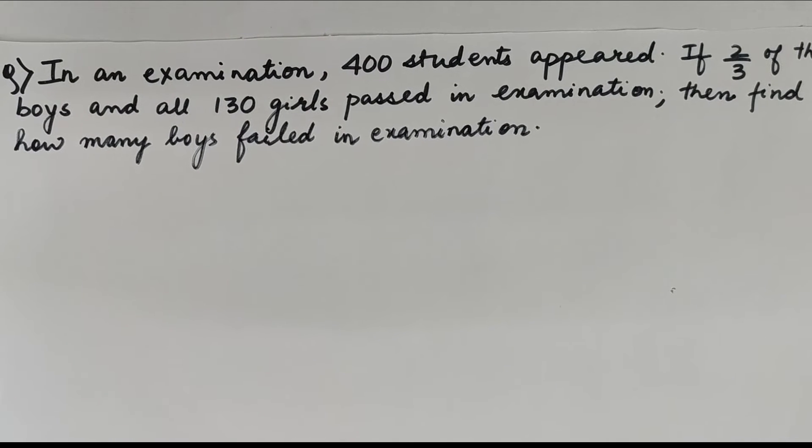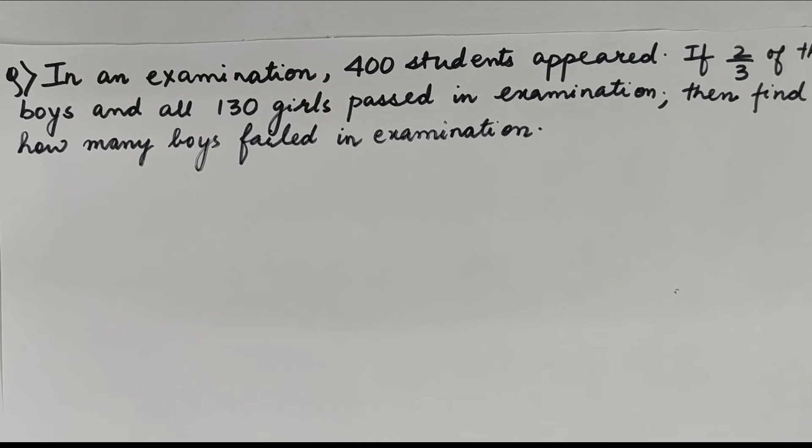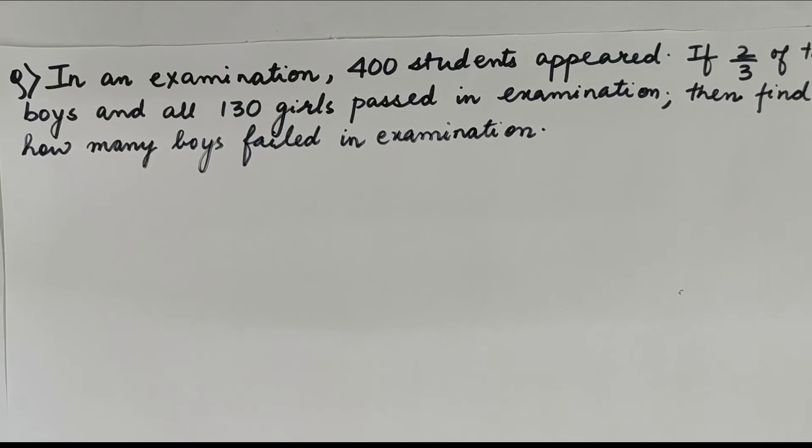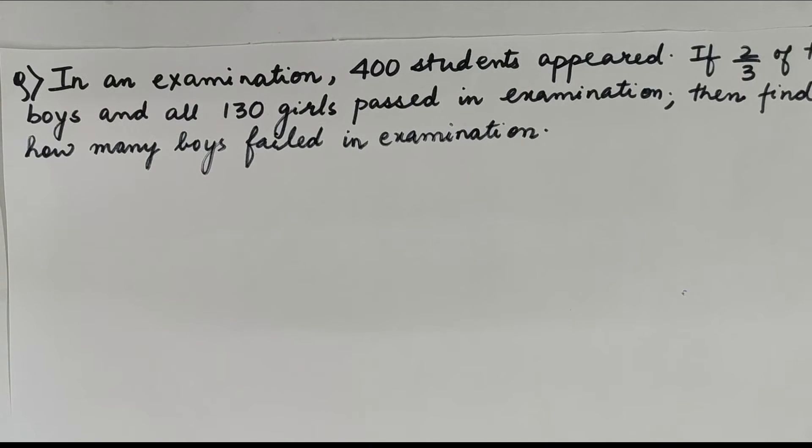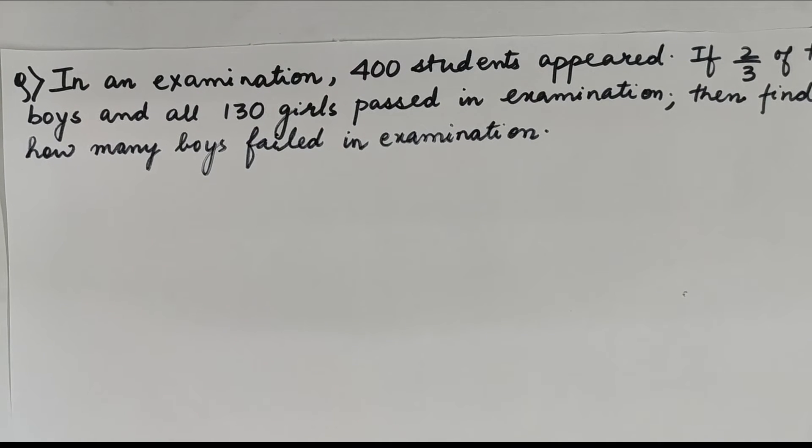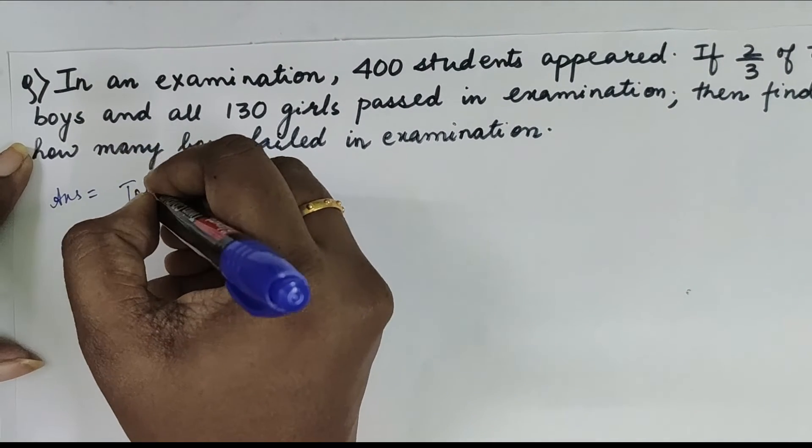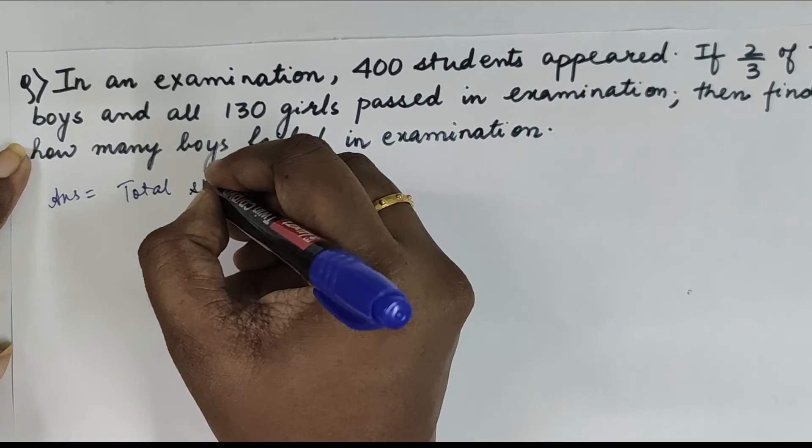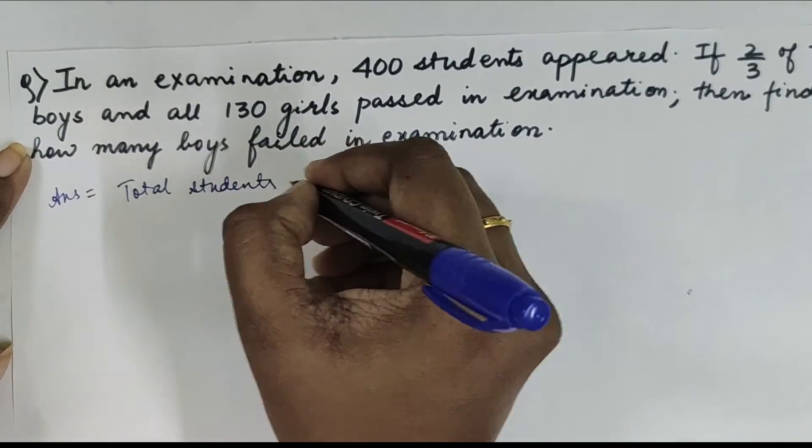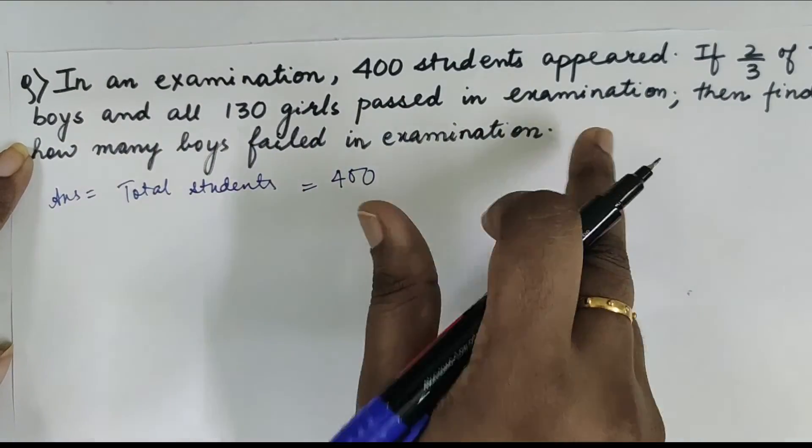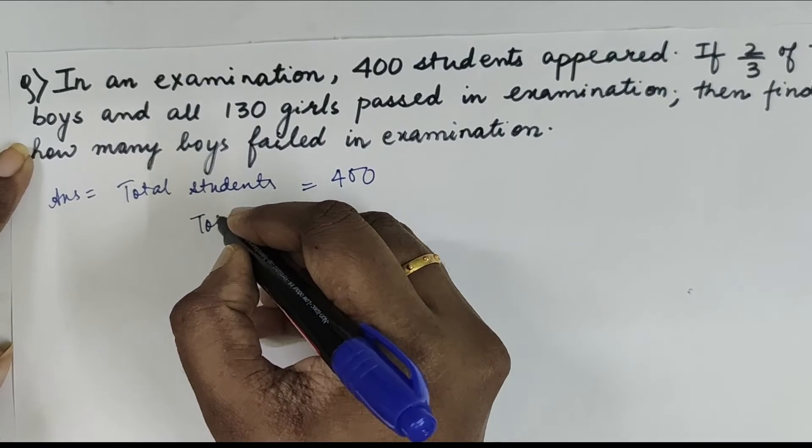Our next question is: In an examination, 400 students appeared. If 2/3 of the boys and all 130 girls passed in examination, then find how many boys failed in the examination. So here, what data is given to us?